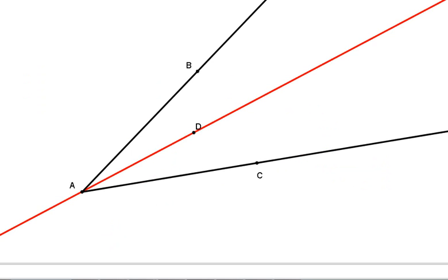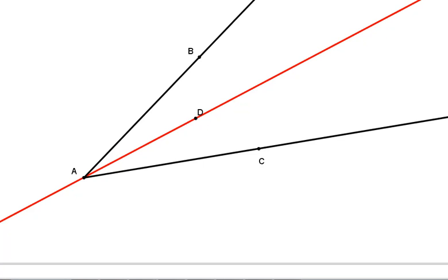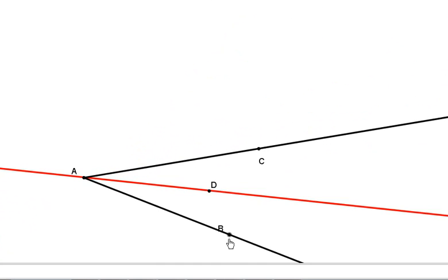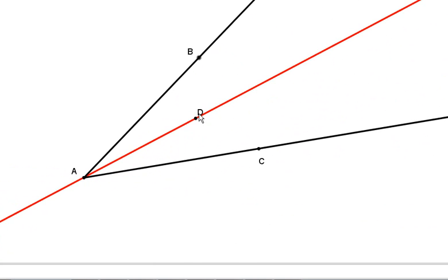Let's look at GeoGebra. So here, we have an angle. We can change the size of the angle, and no matter what size angle we're looking at, we see that line AD is the angle bisector.